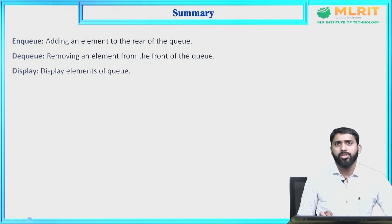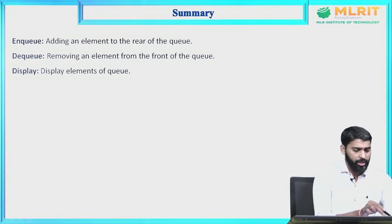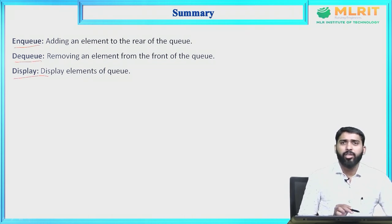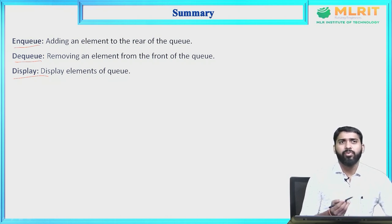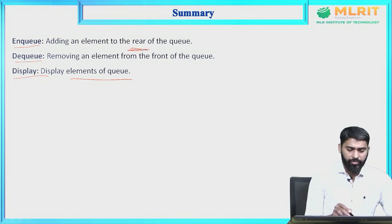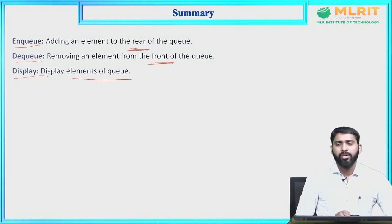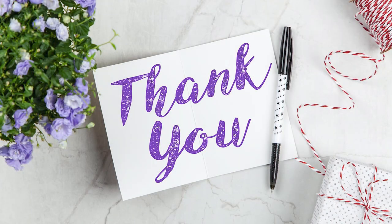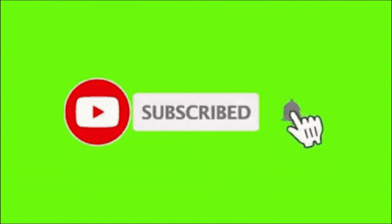Summary of the session: we discussed three operations in queue — enqueue, dequeue, and display. Enqueue means adding an element into the queue; dequeue means removing an element from the queue; display shows all elements in the queue. For enqueue we use rear, for dequeue we use front. In the next class, we are going to see how to implement queue using linked list in C programming.